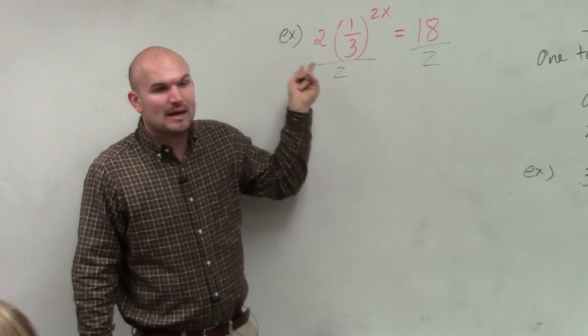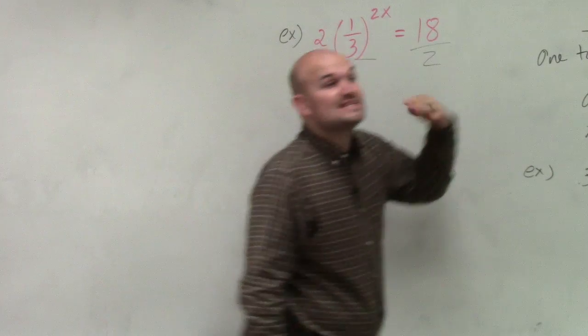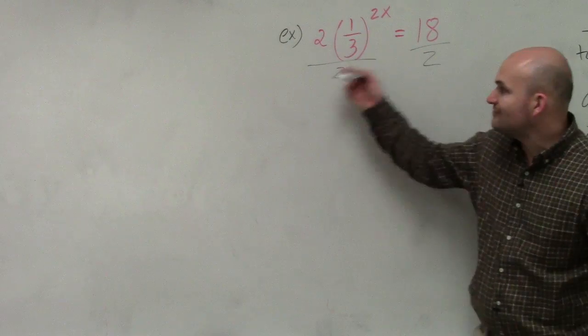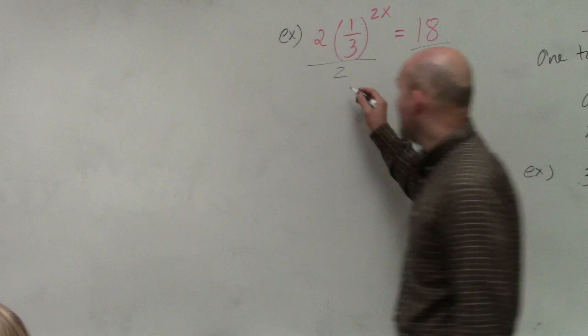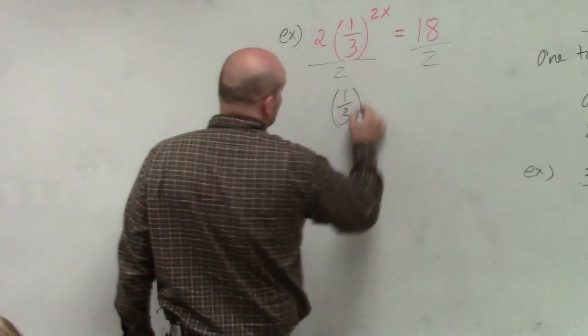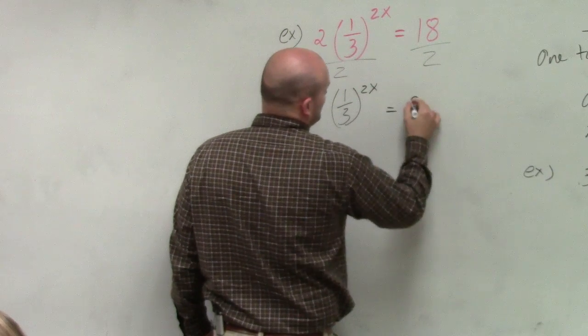Right now, my exponent is being multiplied by 2. So the first thing I want to do is undo multiplying by 2. I divide by 2 on both sides. Now I have 1/3 raised to the 2x equals 9.